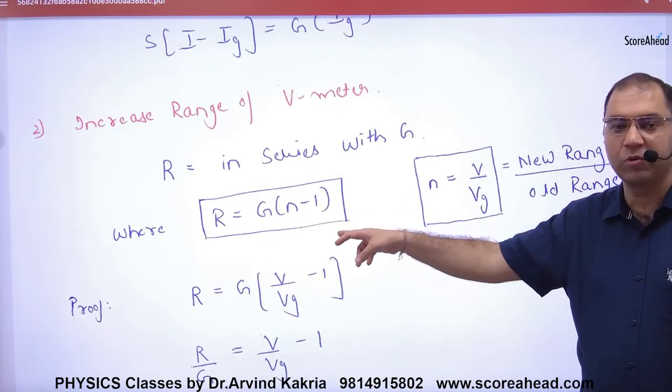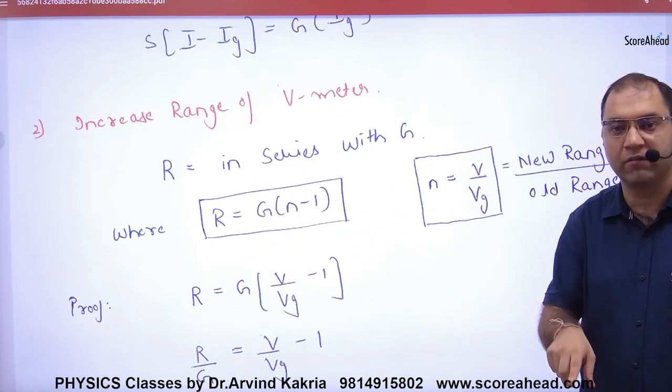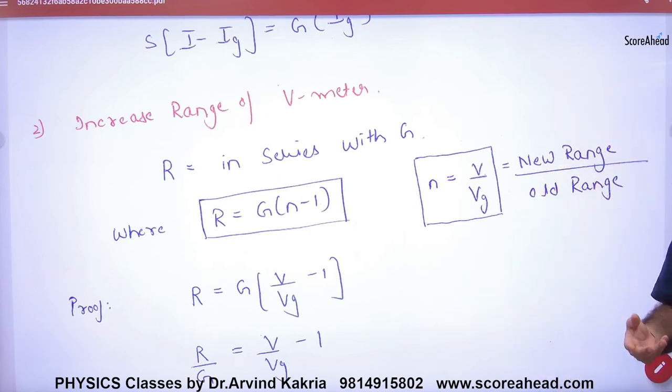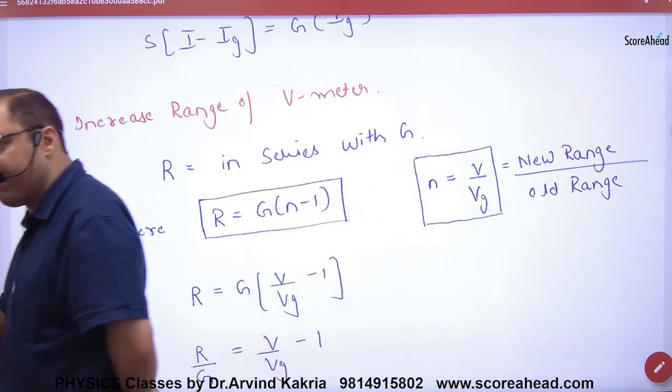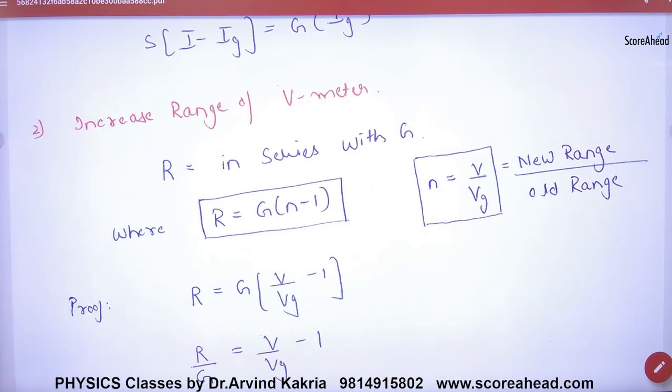Alternatively, (I_G × G) / (N-1), where N equals new range upon old range. For voltmeter, V means the voltage it will measure. So you can use these two formulas.